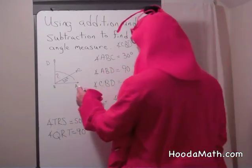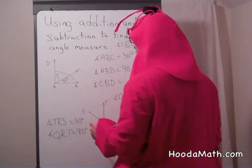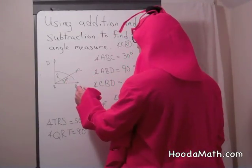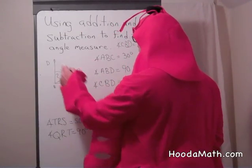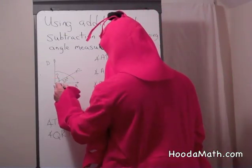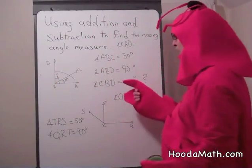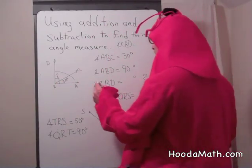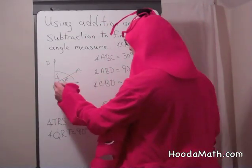We know that angle ABC is 30 degrees. And we know that angle ABD is 90 degrees. That's this whole big angle. So how do we know the measure of angle CBD?